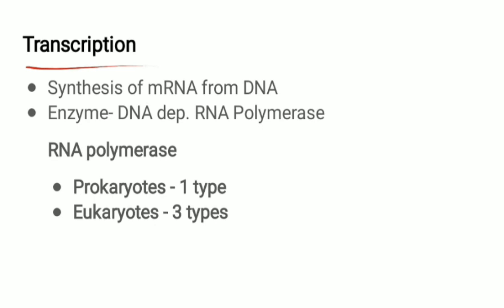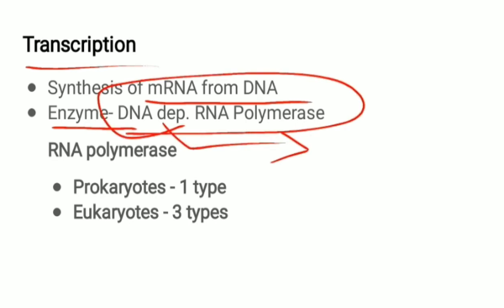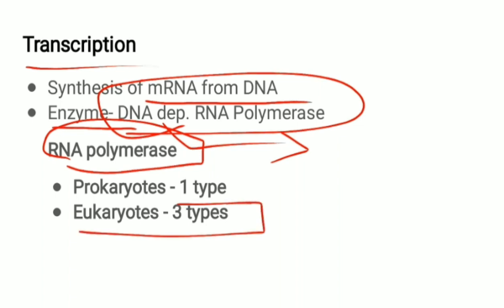Transcription is the synthesis of mRNA from DNA. The enzyme involved is DNA-dependent RNA polymerase — it is called DNA-dependent because one strand of DNA acts as a template for mRNA synthesis. In prokaryotes, there is only one type of RNA polymerase, whereas in eukaryotes there are three types.